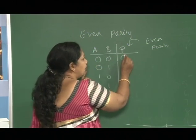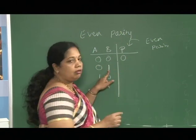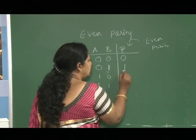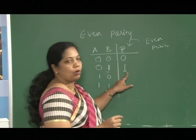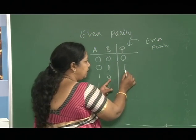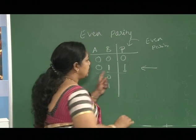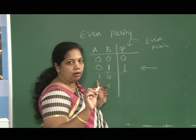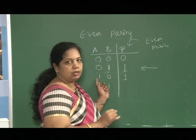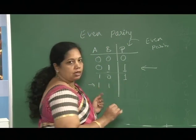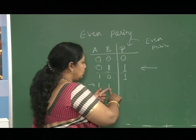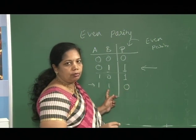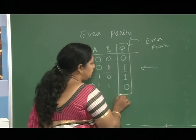For input 00, we write 0 parity. For the next combination with a single 1 — an odd number of 1s — we put parity bit 1, making the total count even. For the combination with one 1 again, we add one more bit to make it even. For inputs 1 and 1, which already have an even number of 1s, the parity bit is 0. This extra bit is the parity bit.